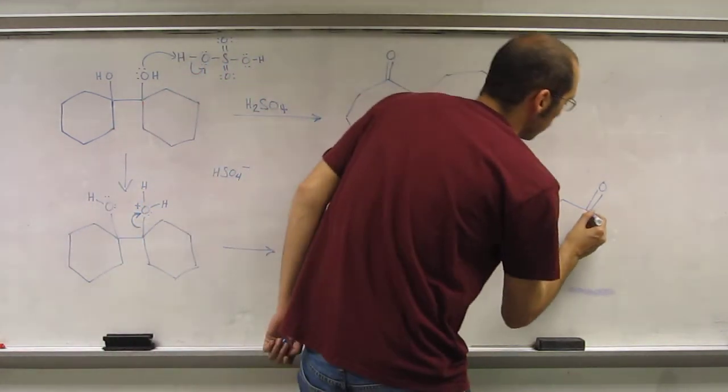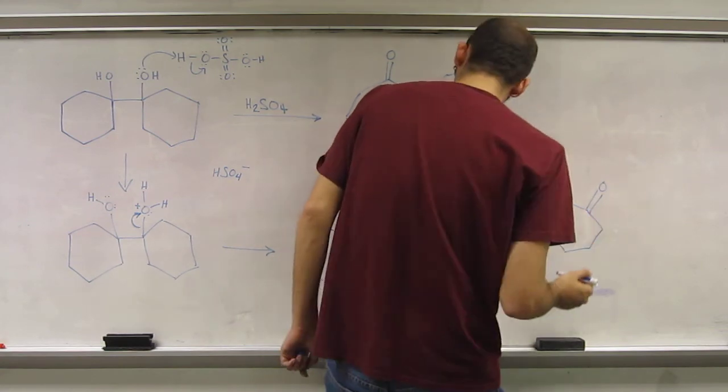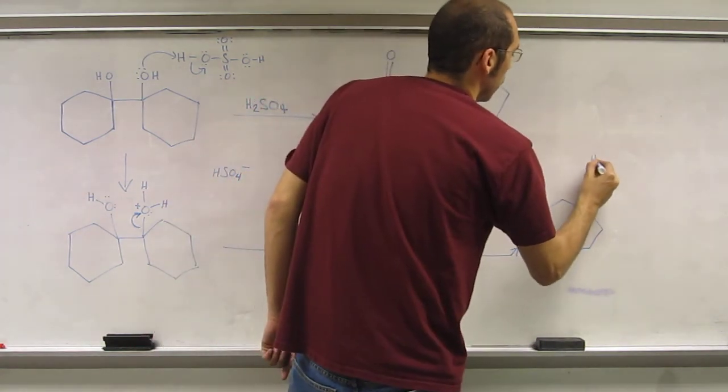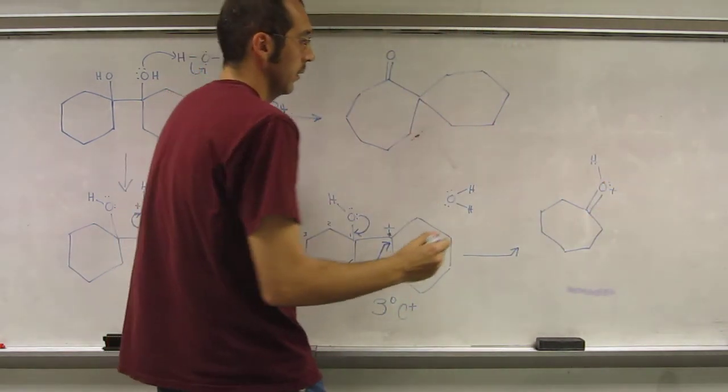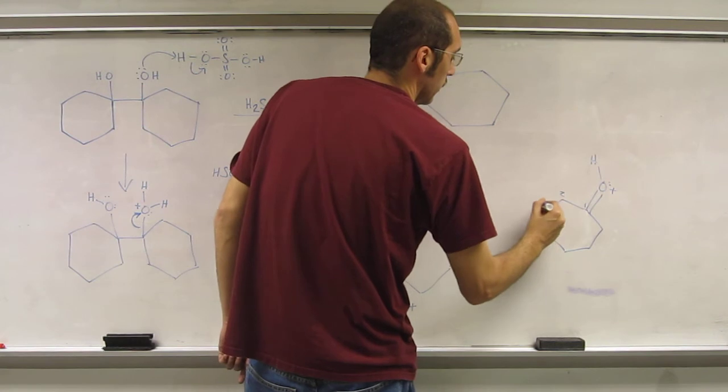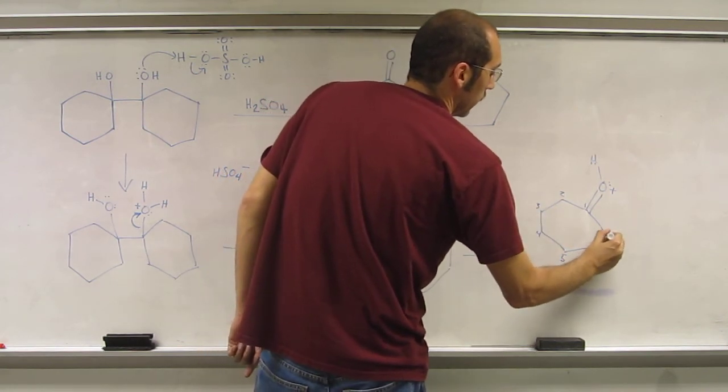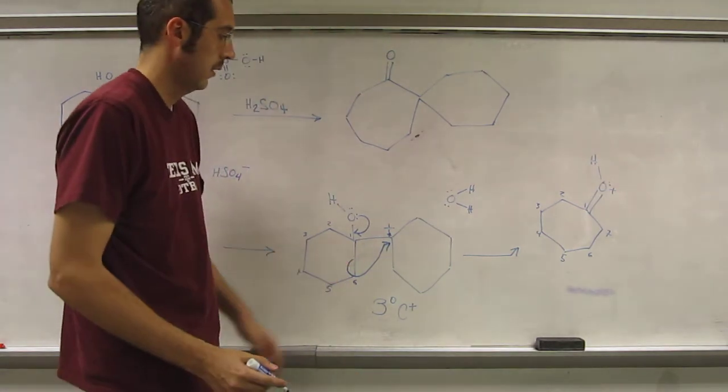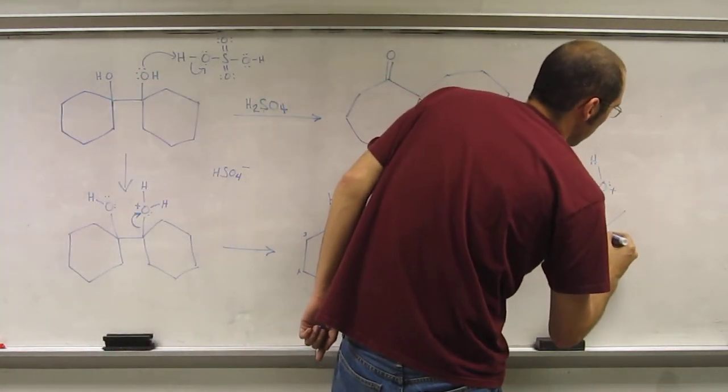So you've got that, so we want to count. So the proton's still there, so if you want to count, one, two, three, four, five, six, seven, and then attached to seven is that six-membered ring.